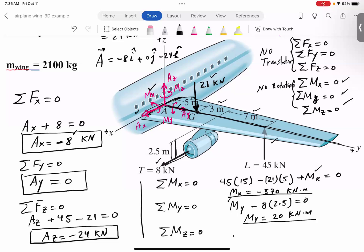Notice that I'm trying to find M sub Z, this unknown moment reaction there. And notice that the forces that are parallel to Z axis, like 21 and 45, don't have any moment. Again, the thrust is the only force that has moment about Z axis.